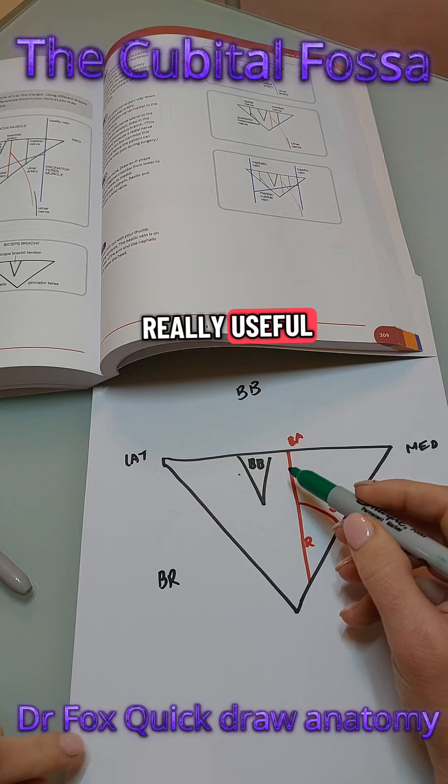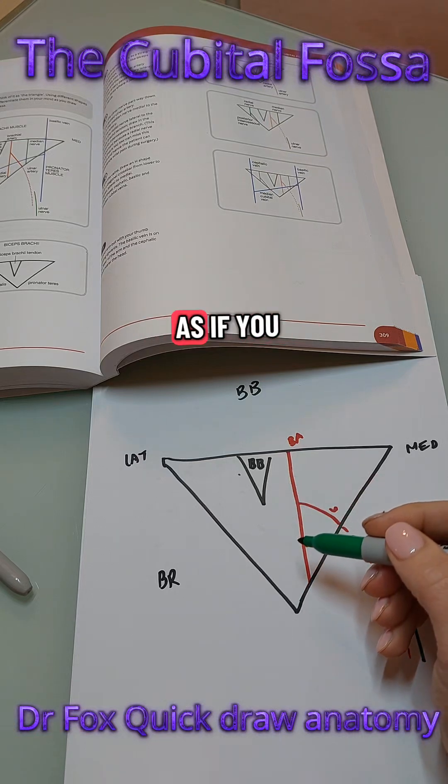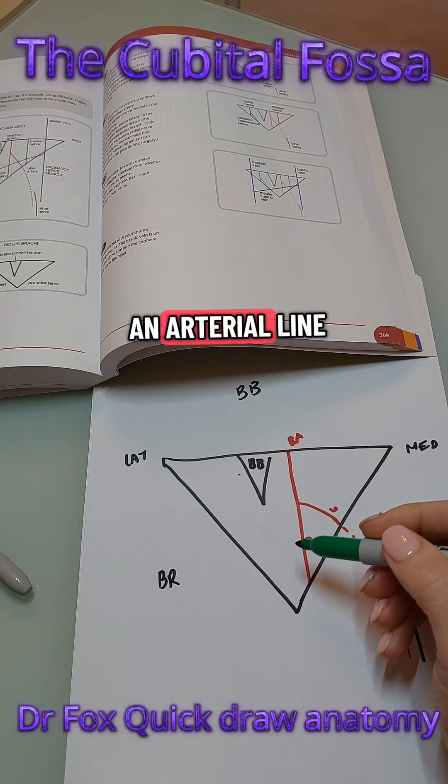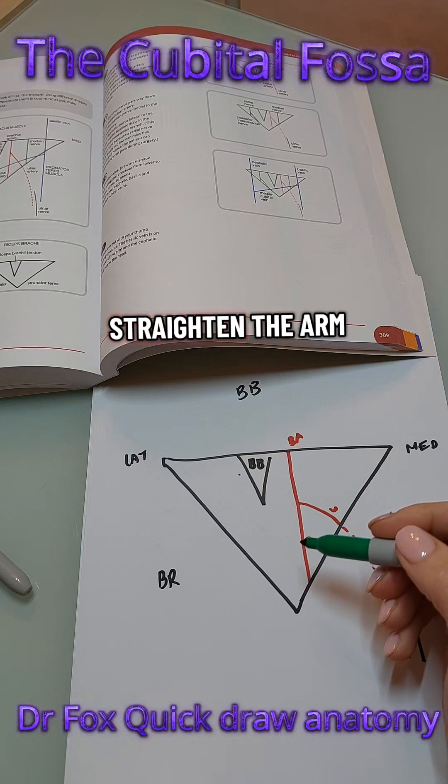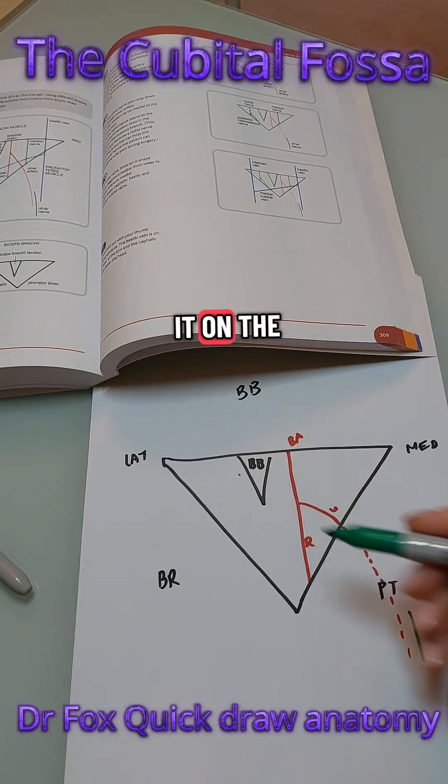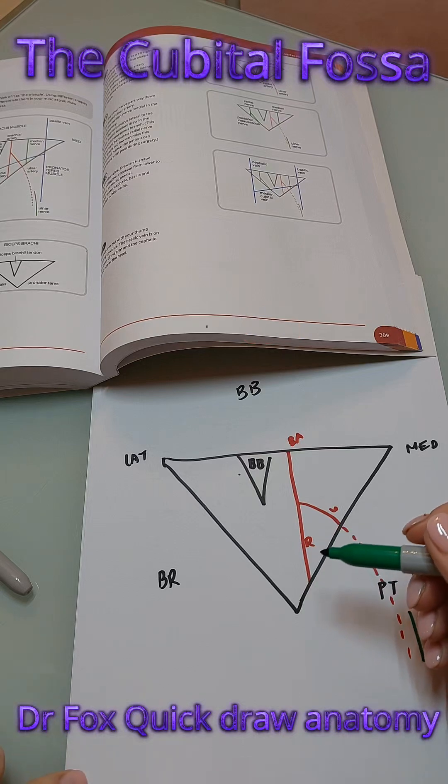This is really useful to know as if you need to find the artery for an arterial line, then if you feel the tendon with a flexed arm and then straighten the arm you'll always find it on the medial side. Virtually always.